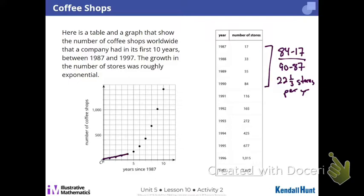The next interval was for six years, is that right? 1987 to 1993. So I'm looking there. So it changed 272 minus 17 over that six-year interval, right? So 272 minus 17 means it changed by 255 stores over six years, or 42.5 stores per year.